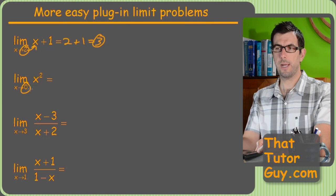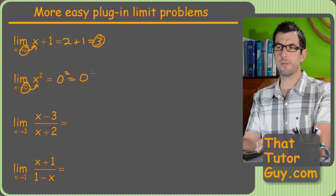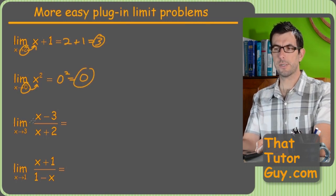x approaching 0 on this one. All right. I don't know what that means. But hey, let's plug in 0 for x squared. We get 0 squared, which equals 0. Nice. The correct answer is 0.